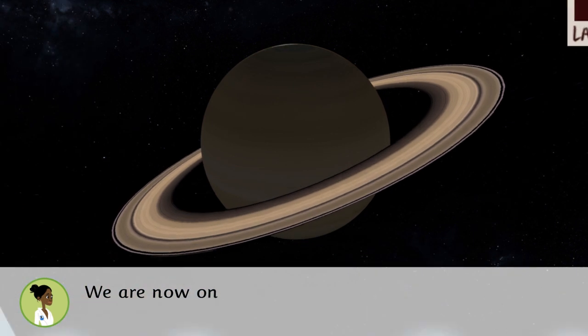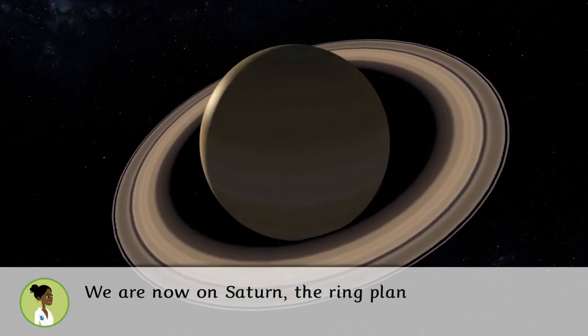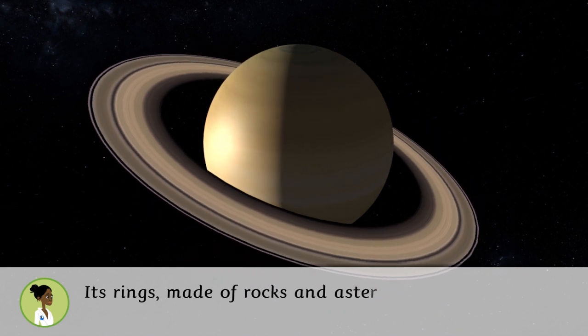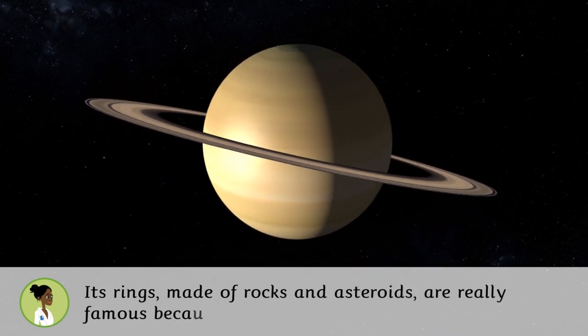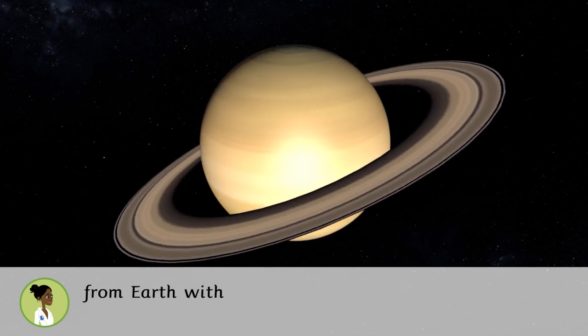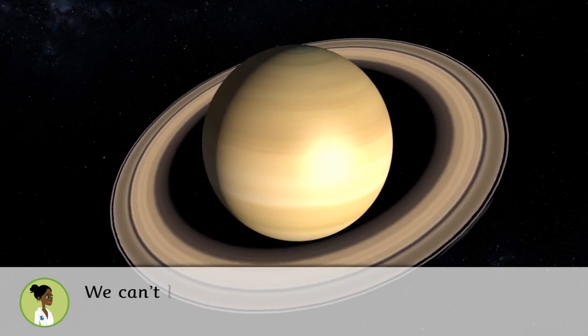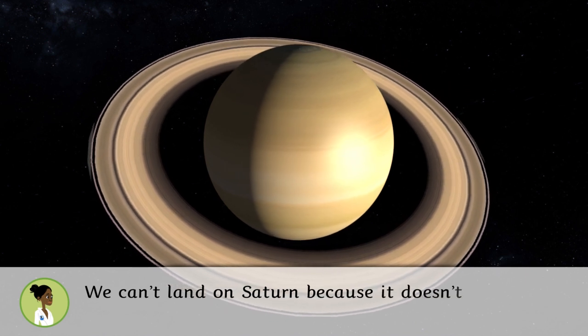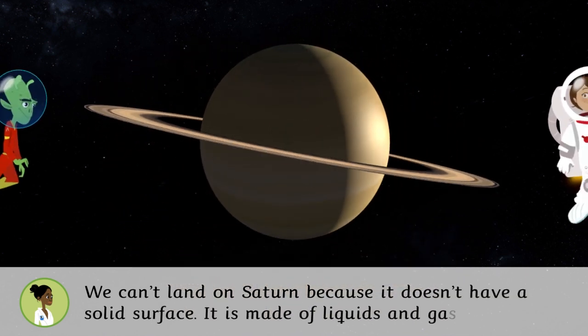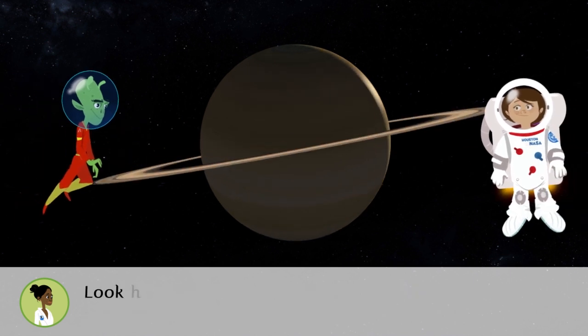We are now on Saturn, the ring planet. Its rings made of rocks and asteroids are really famous because they are the only ones you can see from Earth with a telescope. We can't land on Saturn because it doesn't have a solid surface. It is made of liquids and gases.